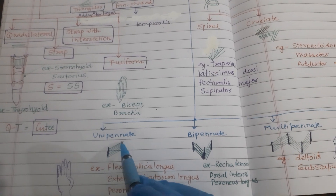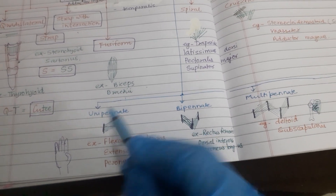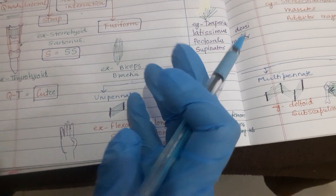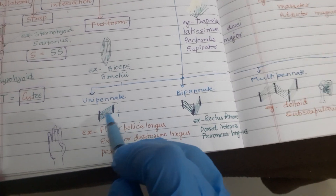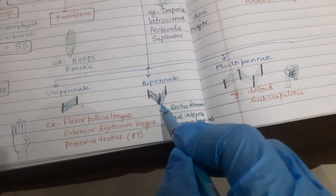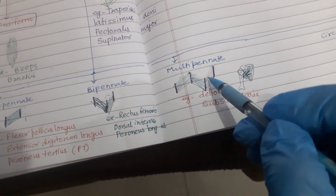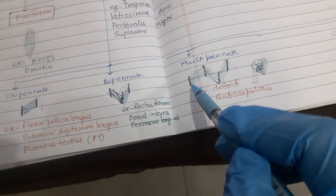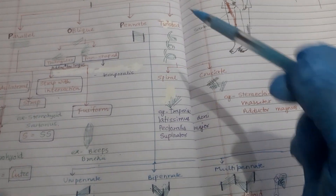Now coming to the pennate variety. When there is a tendinous septa in between the muscle, it increases the surface area for attachment of muscle fibrils. If the fibers go in one direction, it is unipennate. If the fibers converge from opposite directions, it is bipennate. If they diverge in many directions with intervening tendinous septa, it is multipennate. There is also a circumpennate type in a circumferential pattern.